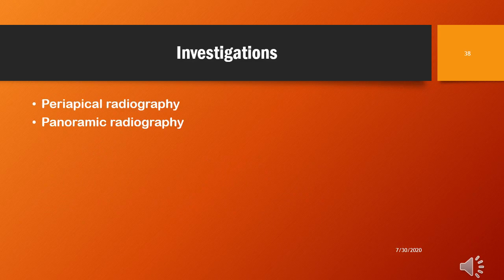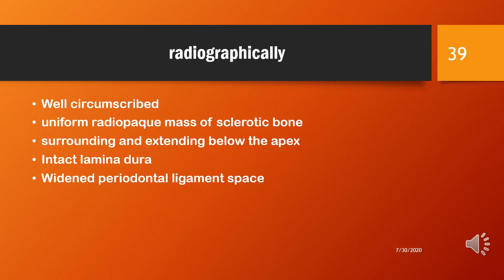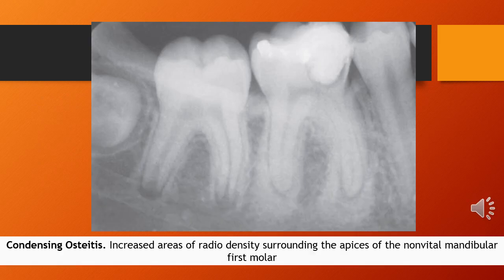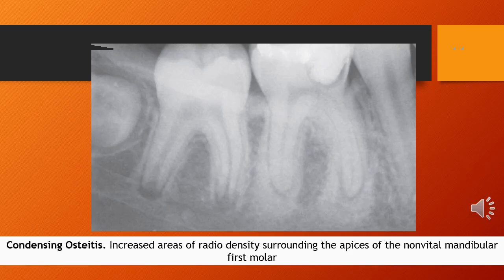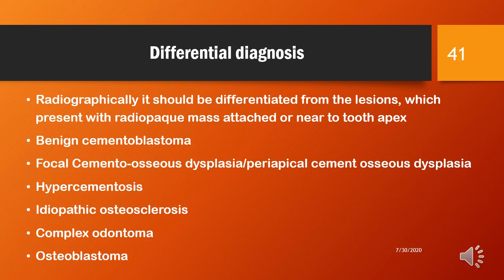Coming to the investigations: periapical radiograph and panoramic radiographs are used. Radiographically, the lesion appears as a well-circumscribed, uniform radiopaque mass of sclerotic bone surrounding and extending below the apex of the tooth, with intact lamina dura and vital periodontal ligament space. This is a periapical radiograph of condensing osteitis showing an increased area of radio-density surrounding the apices of a non-vital mandibular first molar. Radiographically, it should be differentiated from lesions that present with radiopaque mass attached to or near the tooth apex.